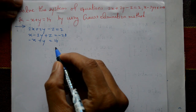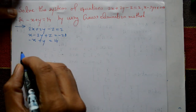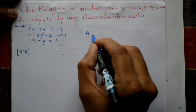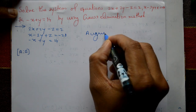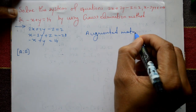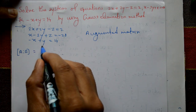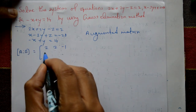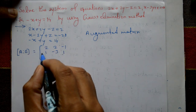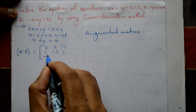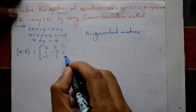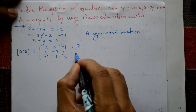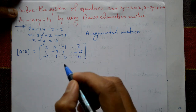Now write in an augmented matrix. The augmented matrix [A|B] has coefficients of x, y, z as: first row 2, 2, minus 1; second row 1, minus 3, 1; third row minus 1, 1, 0 — since there is no z variable. And B is 2, minus 28, and 14.